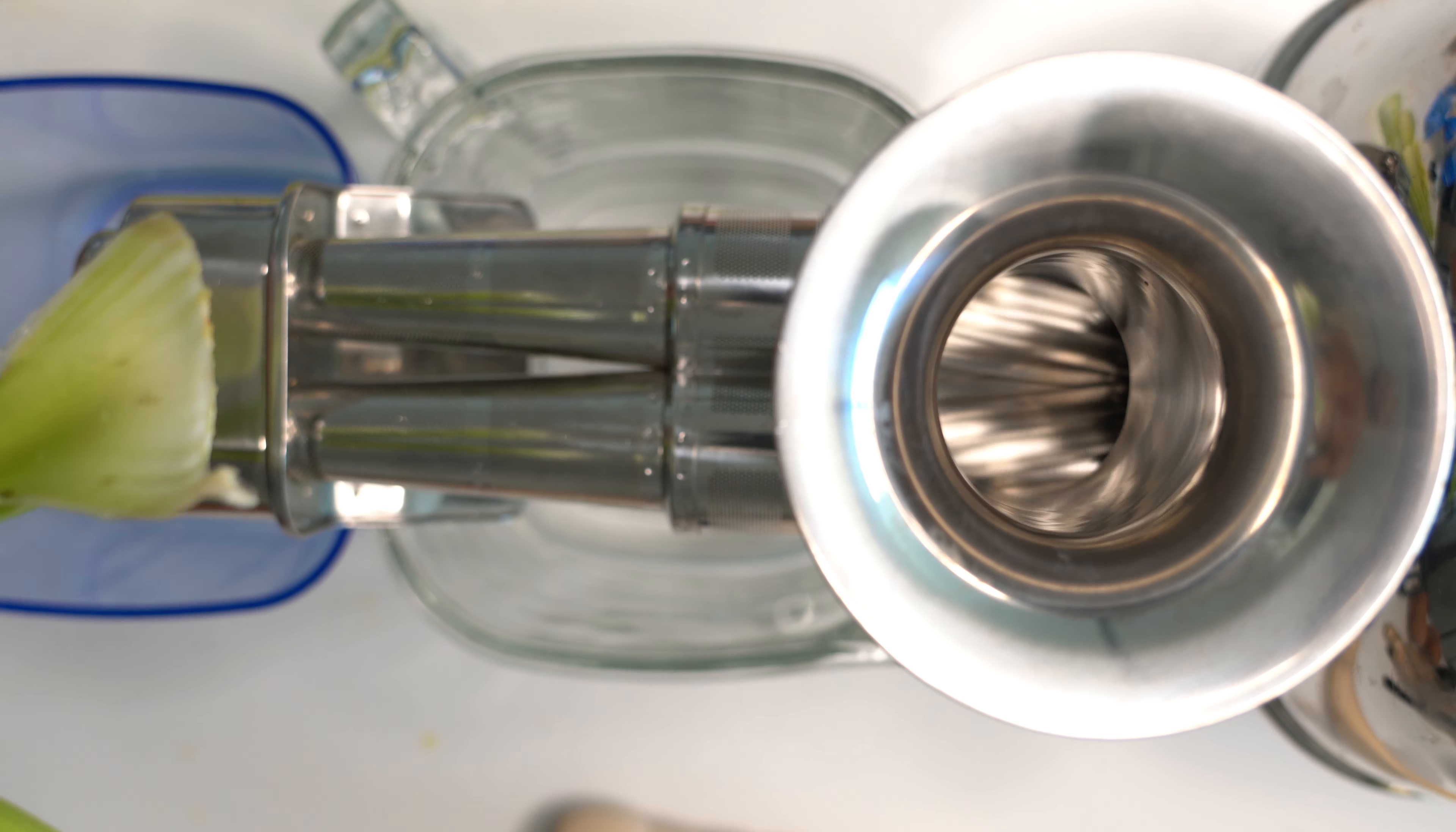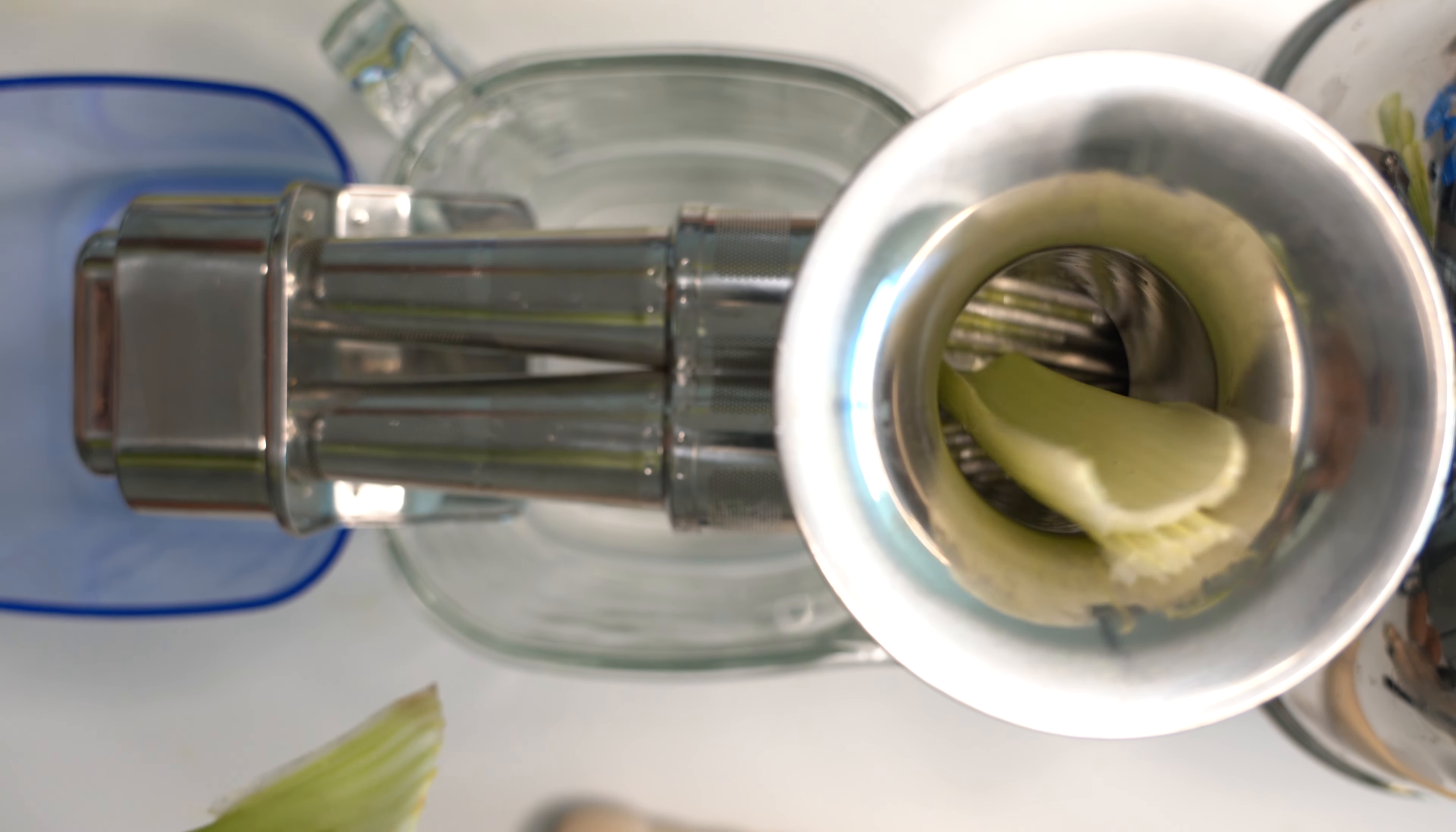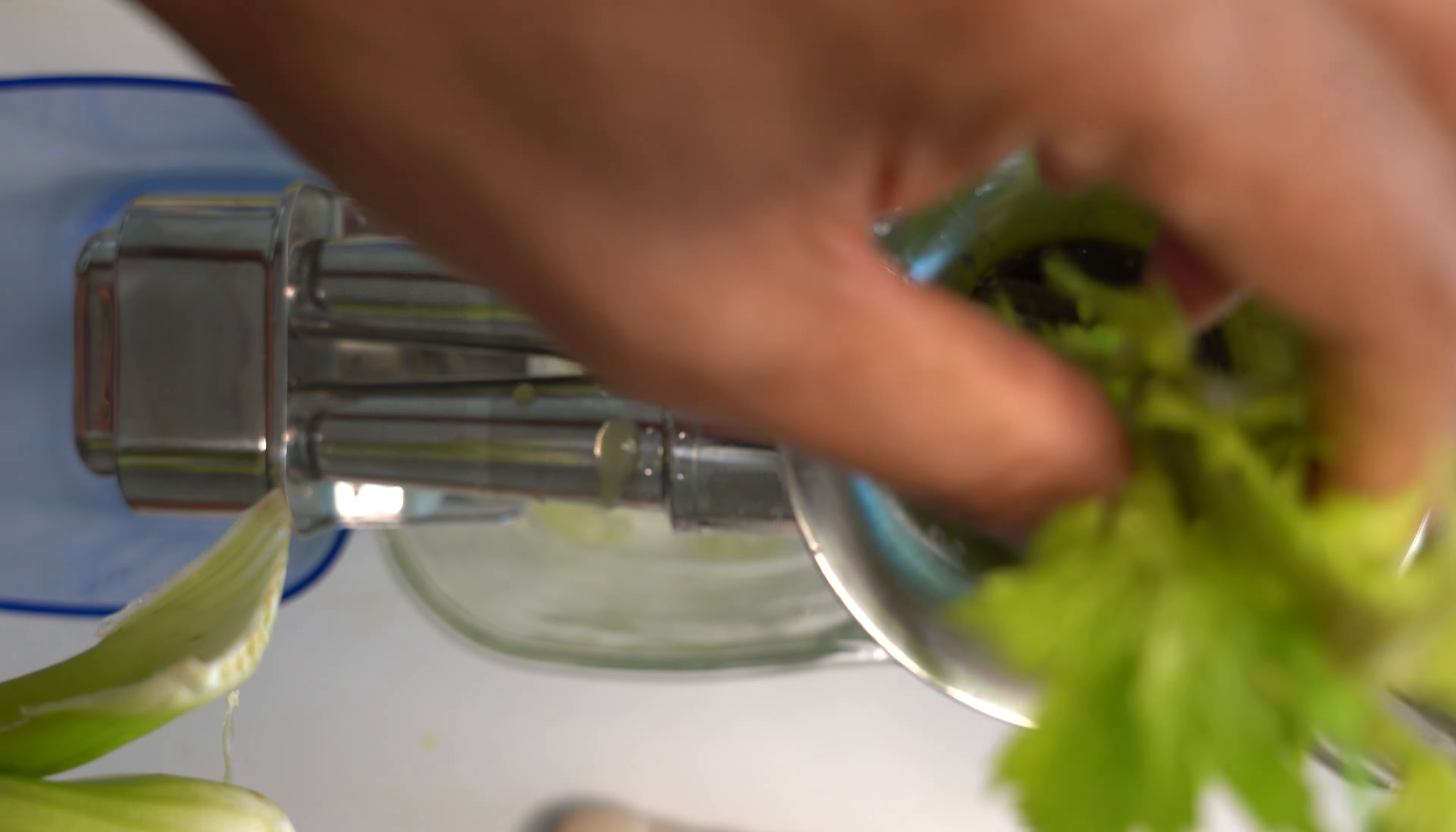Now that it's going, I'm going to start inserting my celery into the celery juicer, or the Angel Juicer. Some pieces may not go all the way down, and in that case you may need to use a plunger.